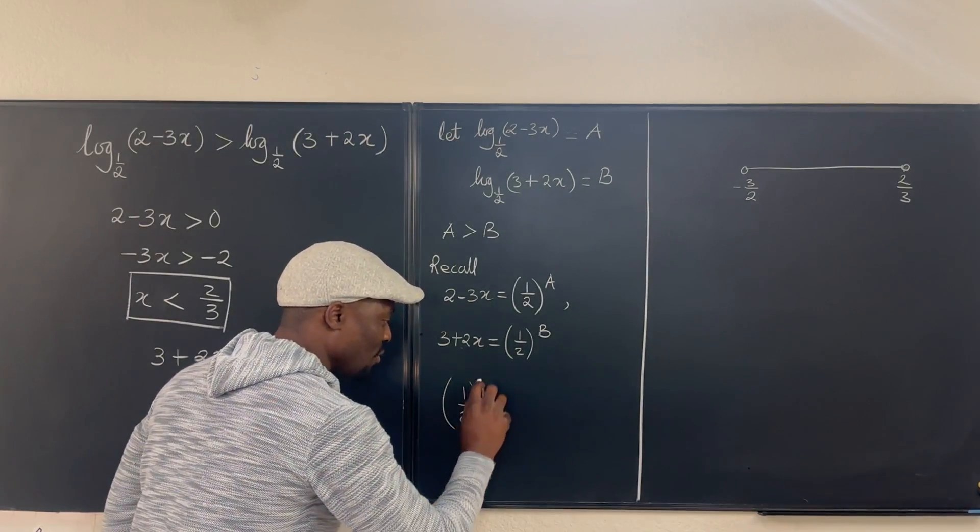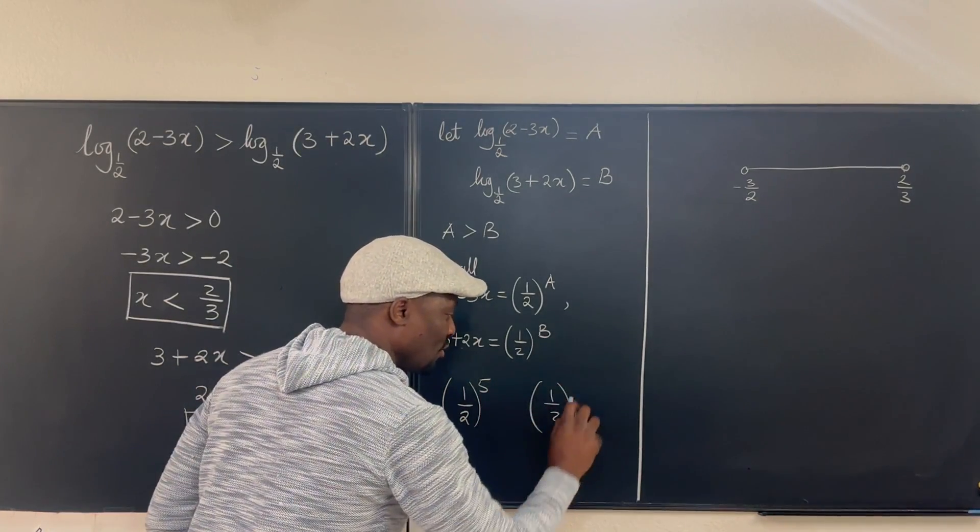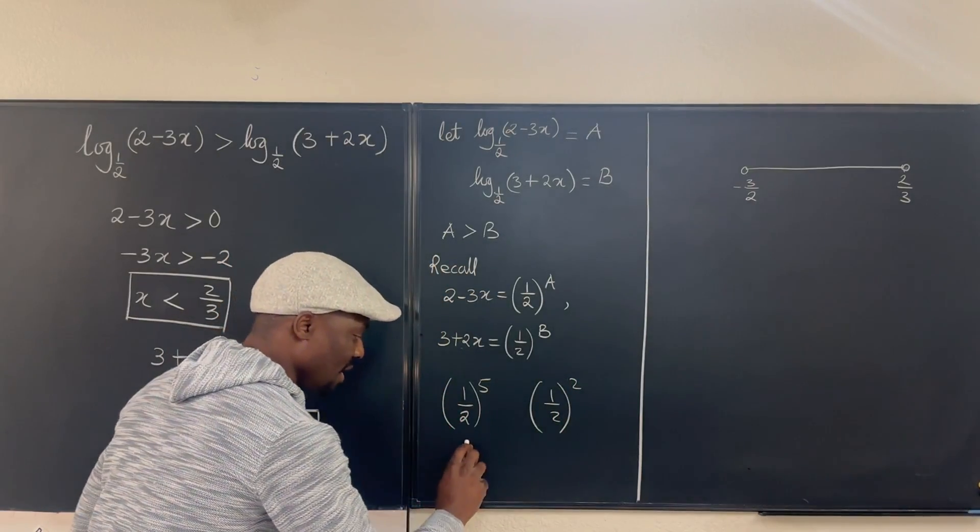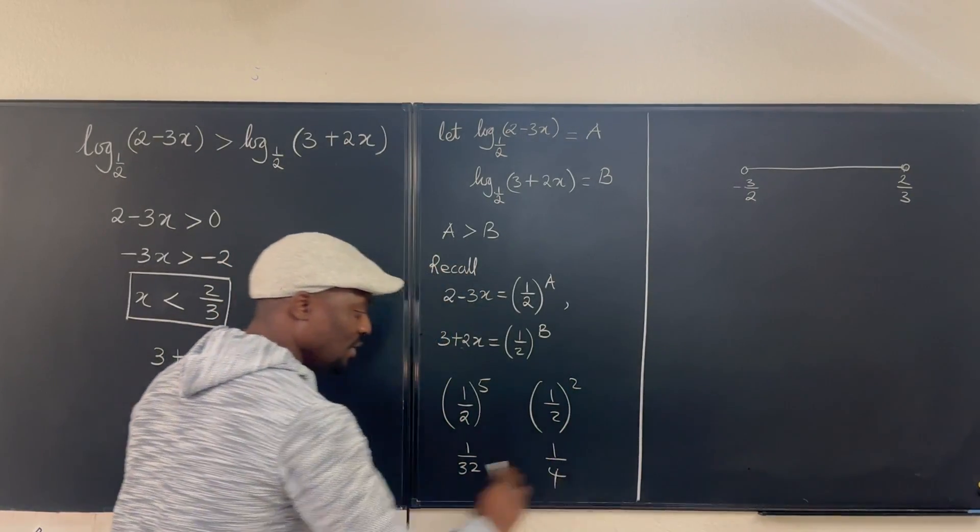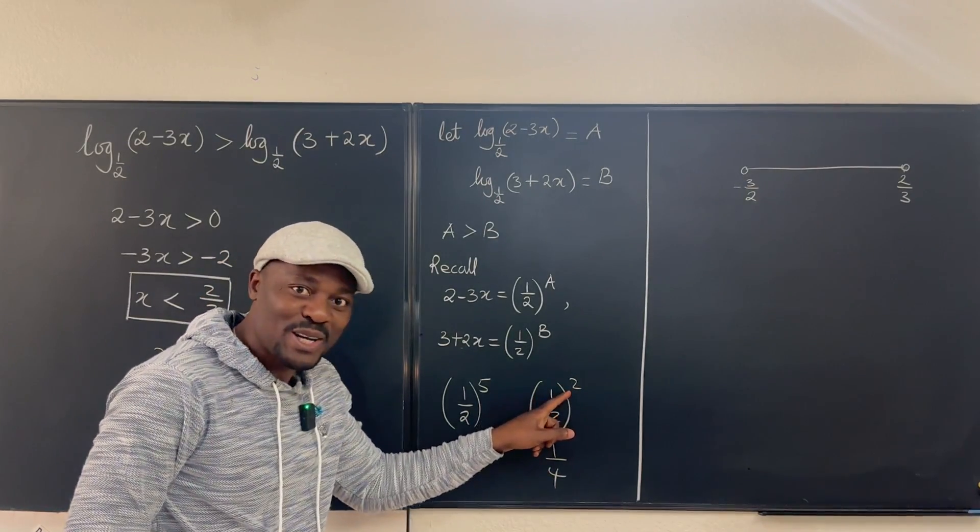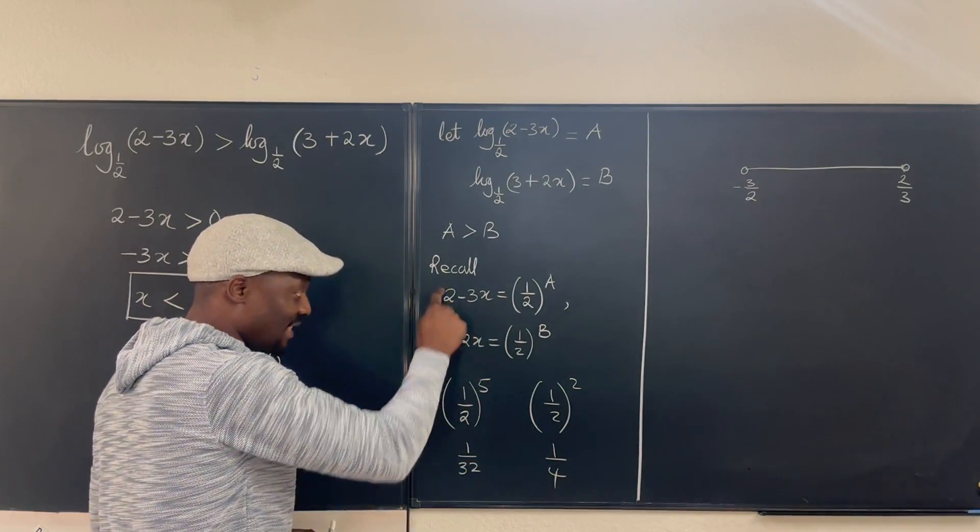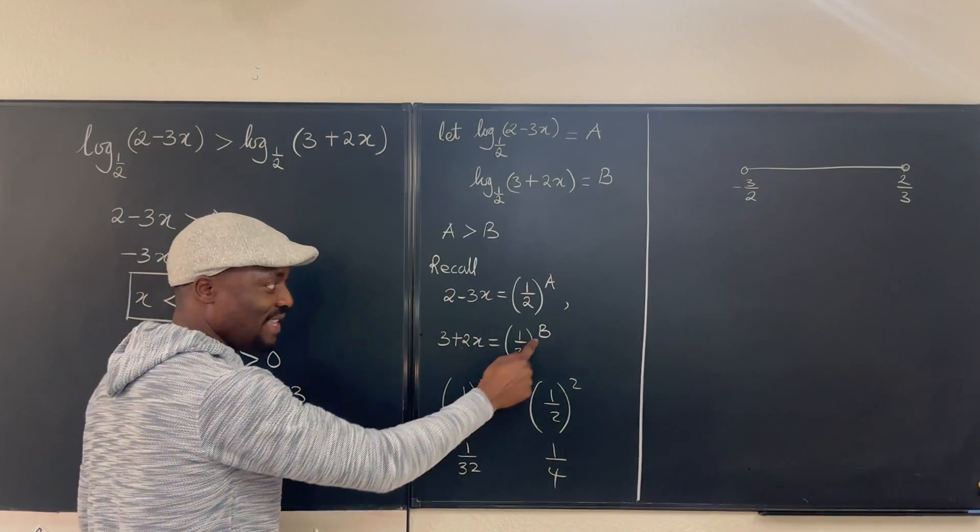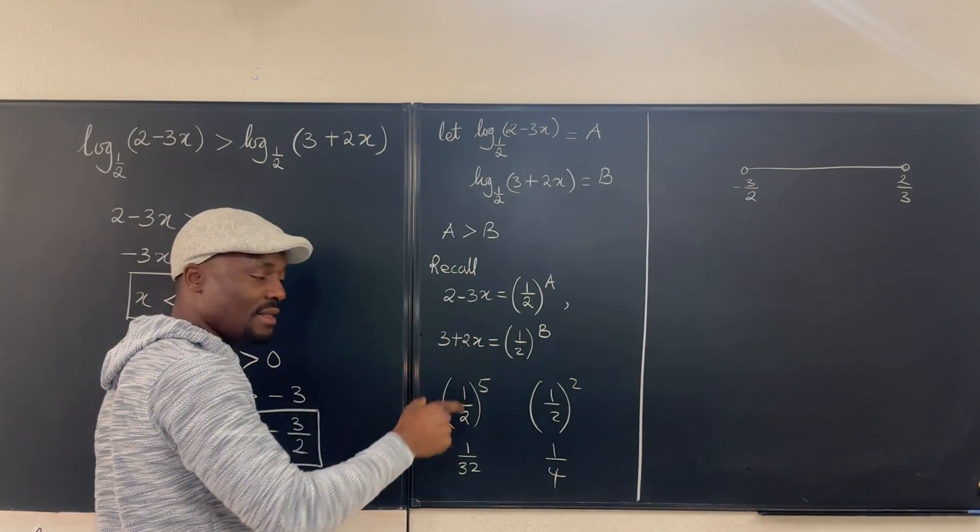One half raised to power 5, let's compare it to one half raised to power 2. Well, this number is 1 over 32. This number is 1 over 4. Which of these is bigger? Well, this is bigger than this because the power is smaller. So what we're saying is whenever, in this case rather, you have this as smaller than this, then this must be bigger than this.